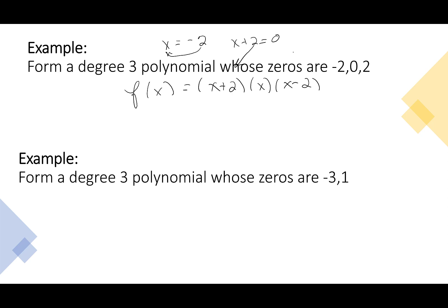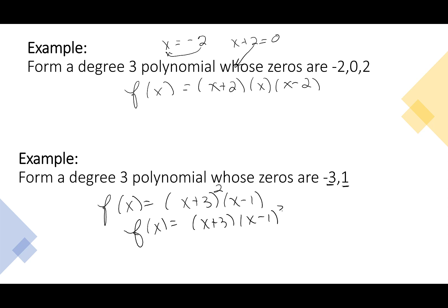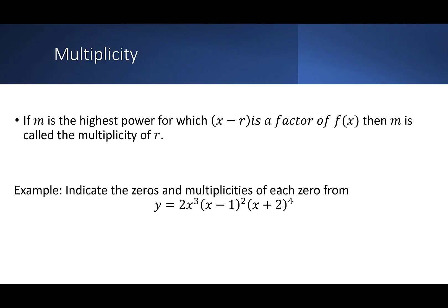Next, make a degree 3 polynomial with zeros −3 and 1 — only two zeros. So f(x) starts as (x + 3)(x − 1), but I need to raise the degree without adding new zeros, which means squaring one of them: either (x + 3)²(x − 1) or (x + 3)(x − 1)². These powers we're talking about for each factor have a name called multiplicity. If m is the highest power for which (x − r) is a factor of f(x), then m is called the multiplicity of r.